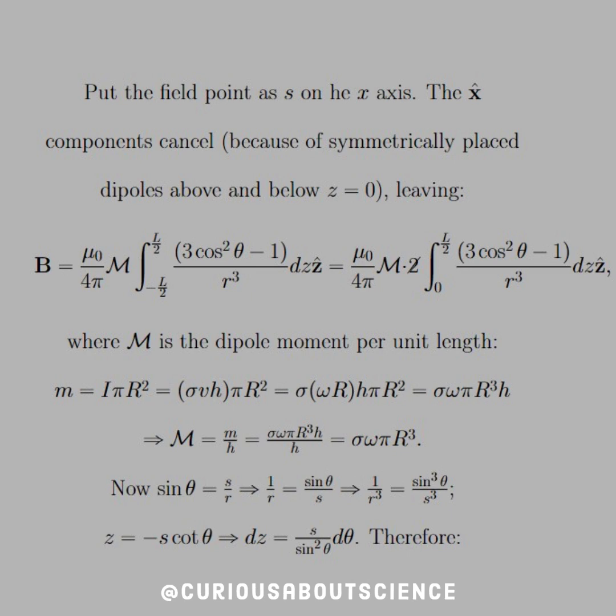So if m is the magnetic dipole and it's i times the vector area, then for a cylinder we know that equals pi r squared, a circle, so we have i pi r squared here. But i is sigma v h, okay, and now we need to put v in terms of omega, which is omega r, and we simplify that through. We see that we end up with a magnetic dipole moment of sigma omega pi r cubed times h. So with capital M being little m over h, the h's cancel and we're left with sigma omega pi r cubed.